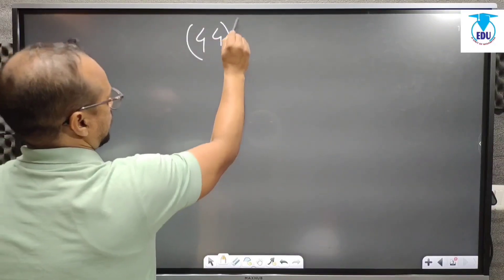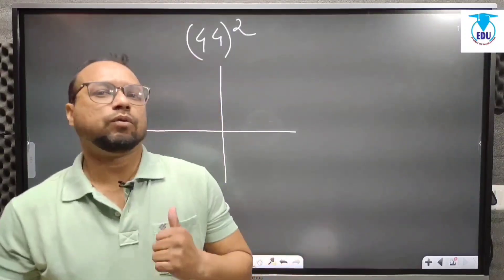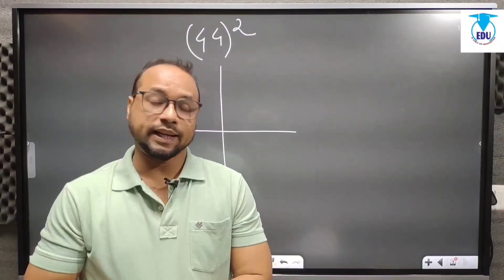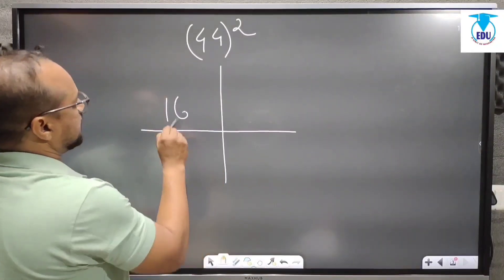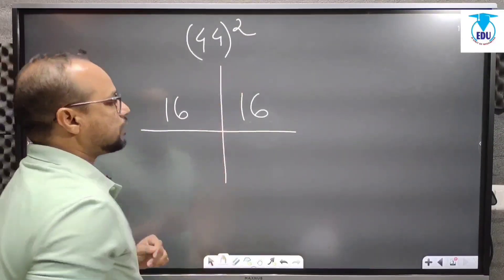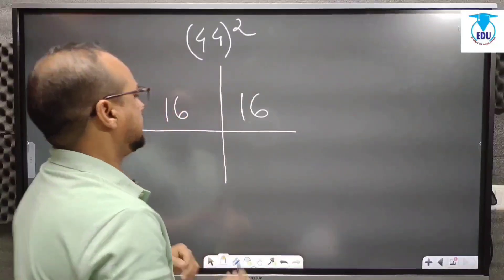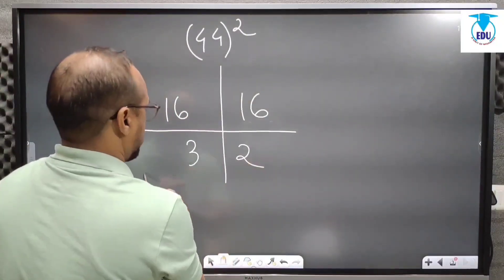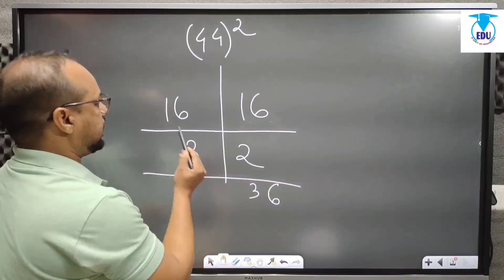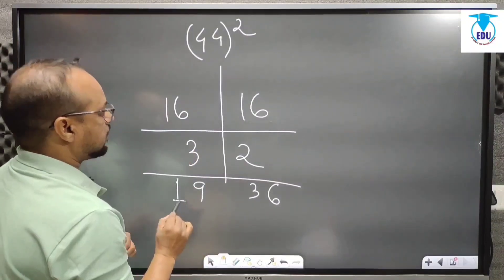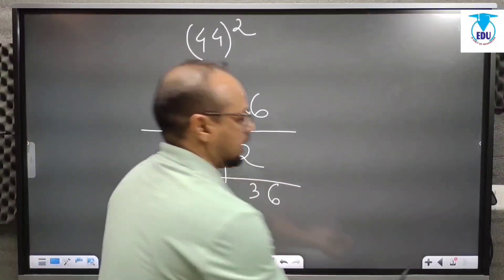Next example: 44 squared. Same method — we draw two lines. Here we have 4 and 4. First we take the square of 4, which is 16, so we put 16 here and 16 here. Next, we multiply 4 and 4 and 2: 4 times 4 is 16, and 16 times 2 is 32. We write 32 in this way, then we just add the columns: 1 plus 3 is 4, wait — 6 plus 3 is 9, 1 plus 2 is 3, and 1. So the square of 44 is 1936.